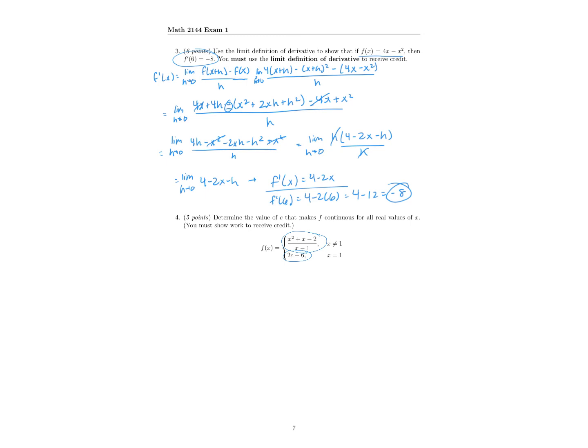If it's a removable discontinuity, the factor x minus 1 in the denominator will cancel with something on top. We can factor x squared plus x minus 2 as x minus 1 times x plus 2. Those factors cancel, confirming there's just a hole — a removable discontinuity — as suspected. So for continuity, the function is approaching the value of x plus 2 when x equals 1, which gives 1 plus 2 equals 3.